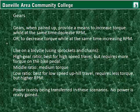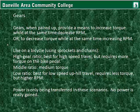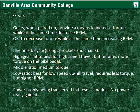Gears, when paired up, provide a means to increase torque while at the same time decrease RPM, and vice versa. Like on a bicycle, which uses sprockets and chains, a high gear ratio is used for high speed travel but it requires more torque on the bike pedal. A middle ratio provides medium torque and slight pressure on the pedal. The low ratio is best for low speed uphill travel and requires less torque but a higher RPM at the pedal. It should be known that power is only being transferred in these scenarios — no power is actually gained.